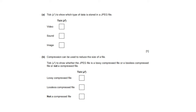Tick to show which type of data is stored in a JPEG file — a JPEG file is used to store image files. Tick to show whether a JPEG file is a lossy compressed file, lossless compressed file, or not a compressed file. JPEG is a lossy compressed file.